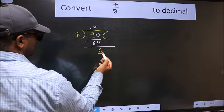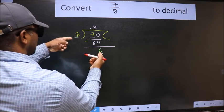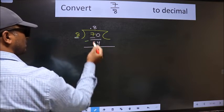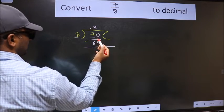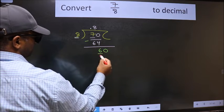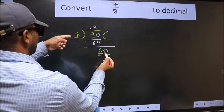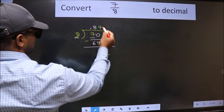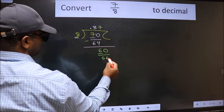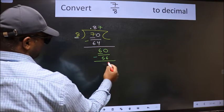Now here we have 6 and here 8. 6 is smaller than 8, and we already have the decimal, so this time we can directly take 0. So, 60. A number close to 60 in the 8 table is 8 sevens, 56. Now we should subtract. We get 4.